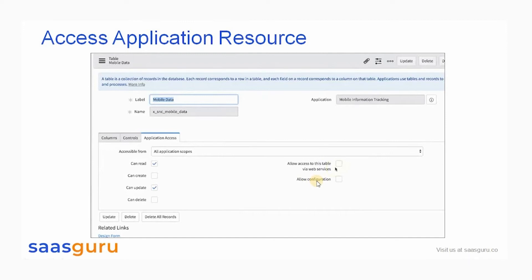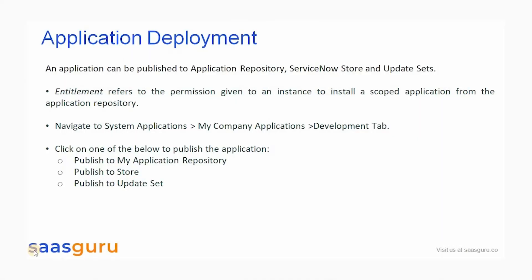Now let's understand how to deploy an application. An application can be published to the Application Repository, the ServiceNow Store, and Update Sets. Entitlement refers to the permission given to an instance to install a scoped application from the Application Repository.